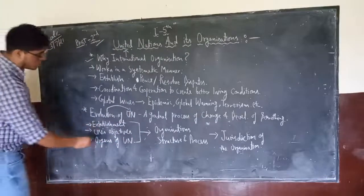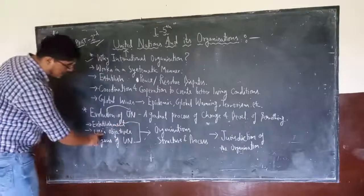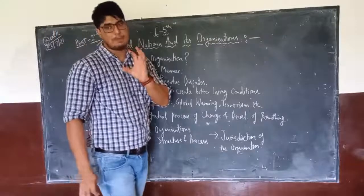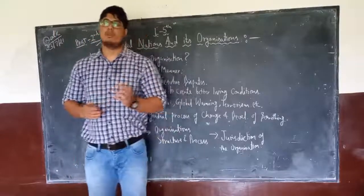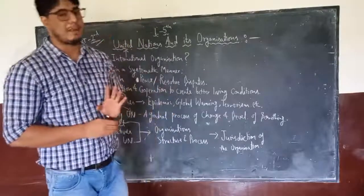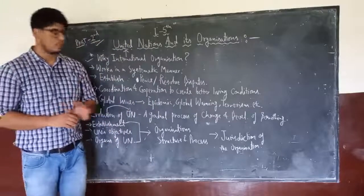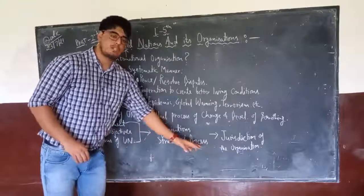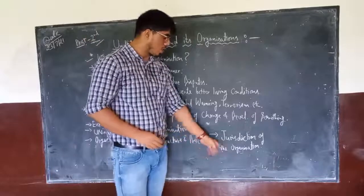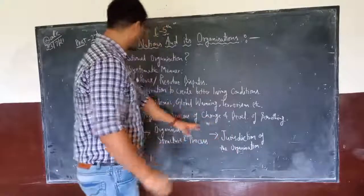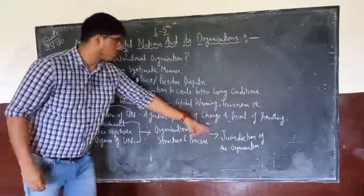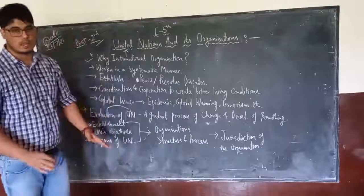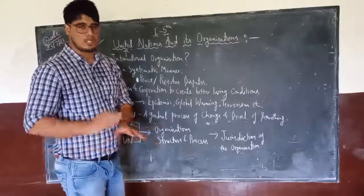We will be talking about how the UN was established, what were the important objectives of the UN, the organs of the UN — although there are 6 important organs but in your NCERT book we will discuss only 2: the General Assembly and the Security Council. We will also discuss the organization's structure and process, and at the last we will talk about the jurisdiction of the organization. Now we will discuss about the evolution of the UN in today's lecture, which I will be teaching from my notes and also from the NCERT.